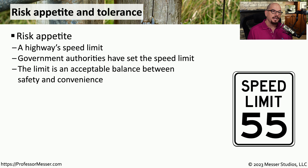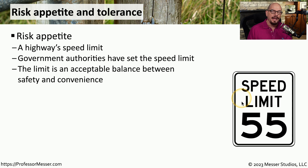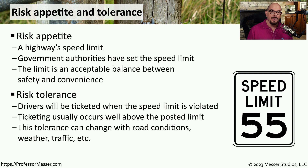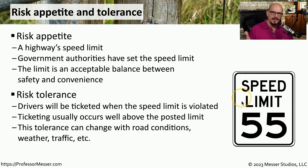Here's a practical example that differentiates between risk appetite and risk tolerance. If you're driving on the highway, the speed limit might be 55 miles an hour — a value set by the government as the acceptable balance between safety and convenience. You are not allowed to exceed 55 mph, and if you do, you're violating the law. However, in practical terms, drivers are not typically ticketed until they go well above the speed limit. This means law enforcement has a higher risk tolerance than their risk appetite. This tolerance might also change based on the situation — in very bad weather, for example, law enforcement may enforce much lower speeds.